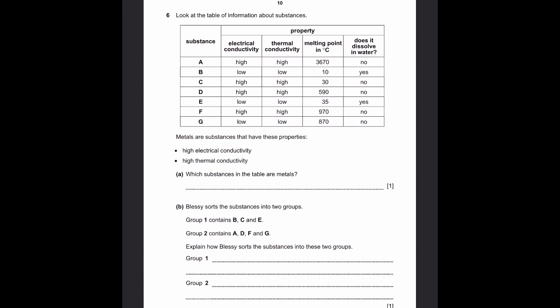Question 6. Look at the table of information about substances. There are 7 different substances given, and each of them have different electrical, thermal, melting point, and dissolving in water properties. Metals are substances that have these properties: high electrical conductivity and high thermal conductivity. Which substances in the table are metals? So whichever substances have both of these columns high are metals. That's A, C, D, and F. That's our answer.